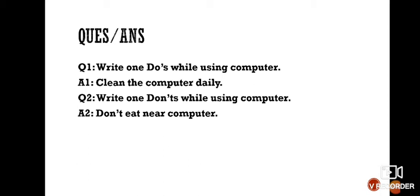So question number two is write one don't while using computer. So one don't is don't eat near computer. You can write any other also of your choice. Don't push the computer, that is also a good one. Or don't make the computer room dirty. Don't touch the wires when the computer is on. That way.